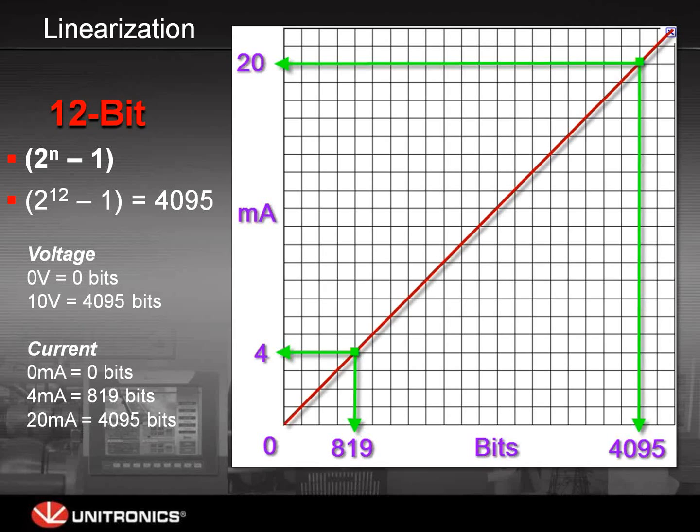As far as linearization, when you read the sensor information in, whether it's voltage or current, it's going to be converted into either a 12-bit, 14-bit, or 10-bit value. The way that you need to change those bit values into meaningful engineering units is via linearization. This graph shows how linearization actually works. In the hardware configuration, you'll define a memory integer to hold the value being read into the controller.